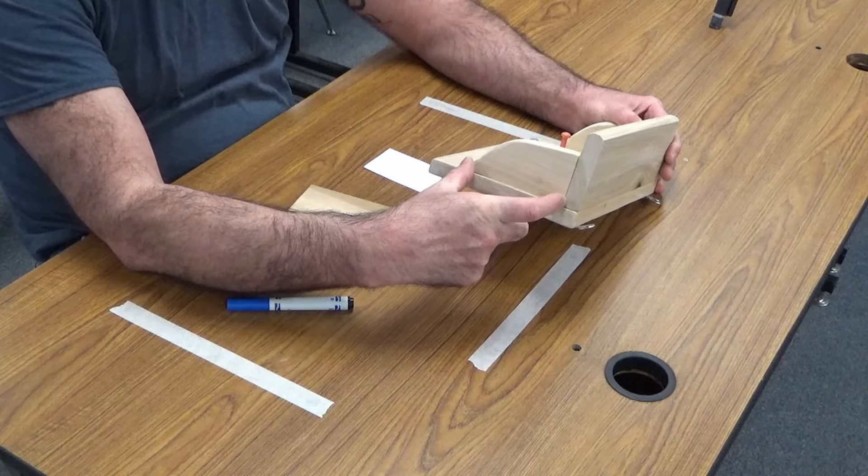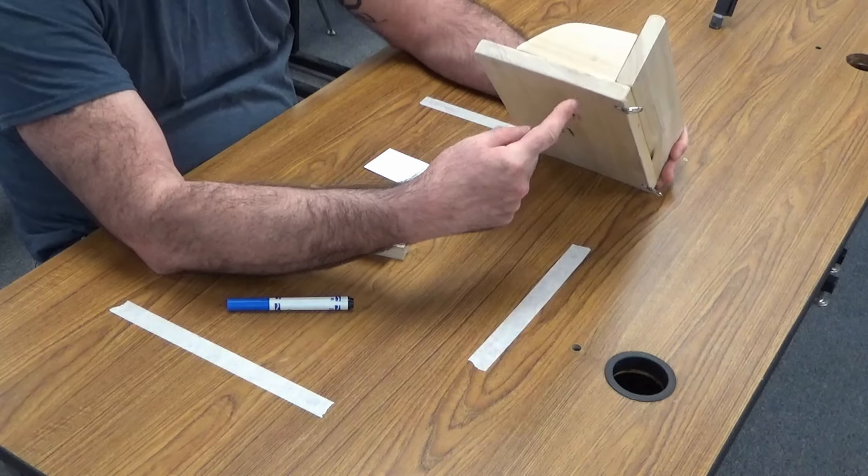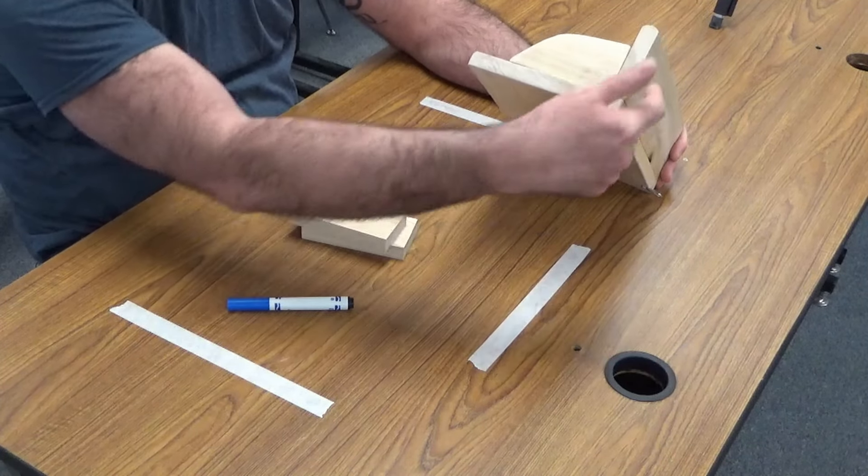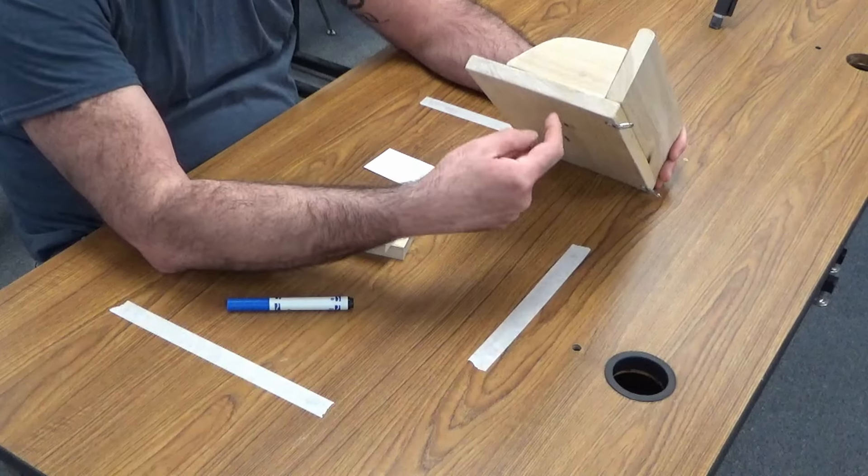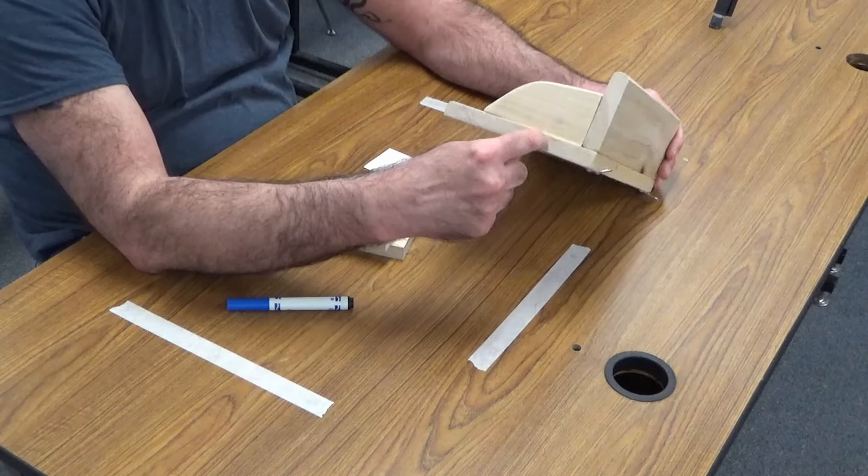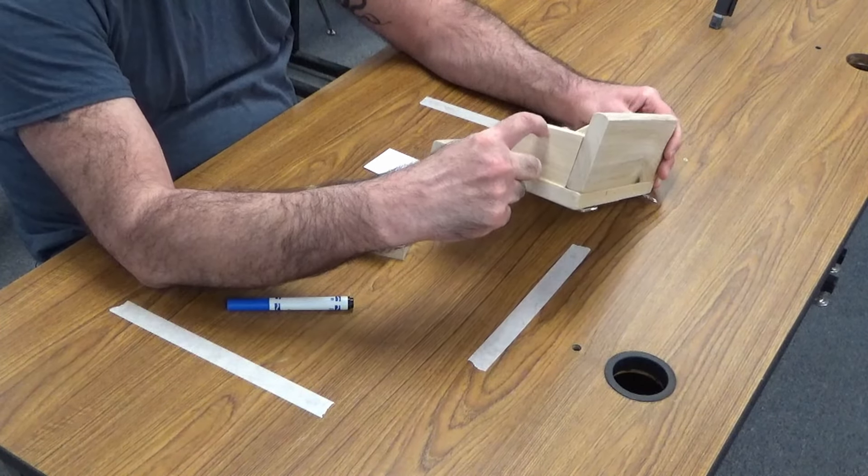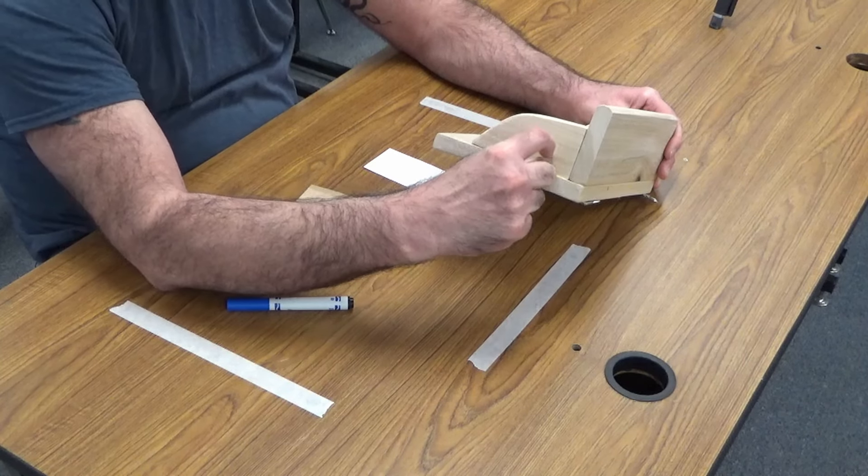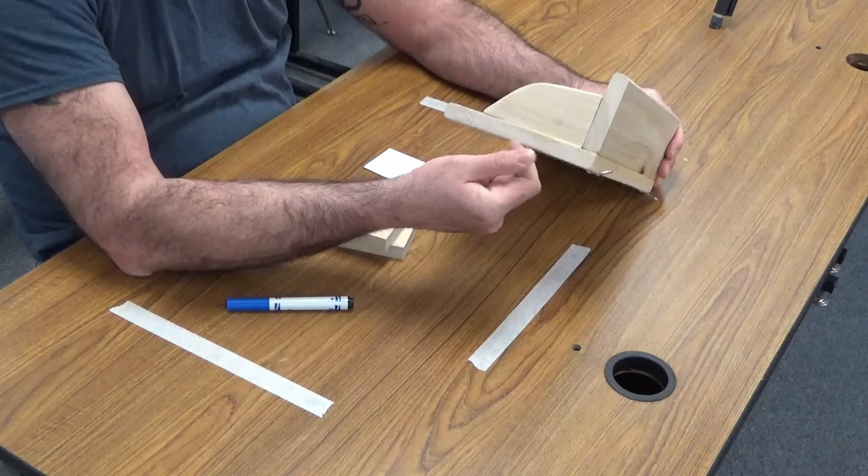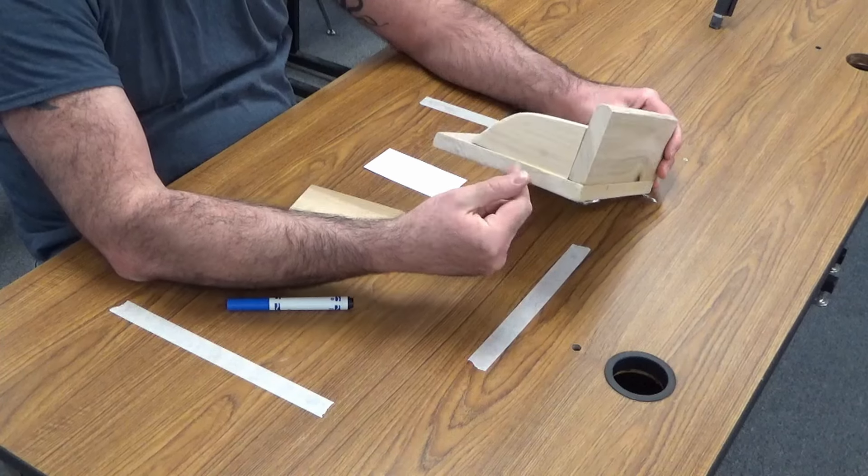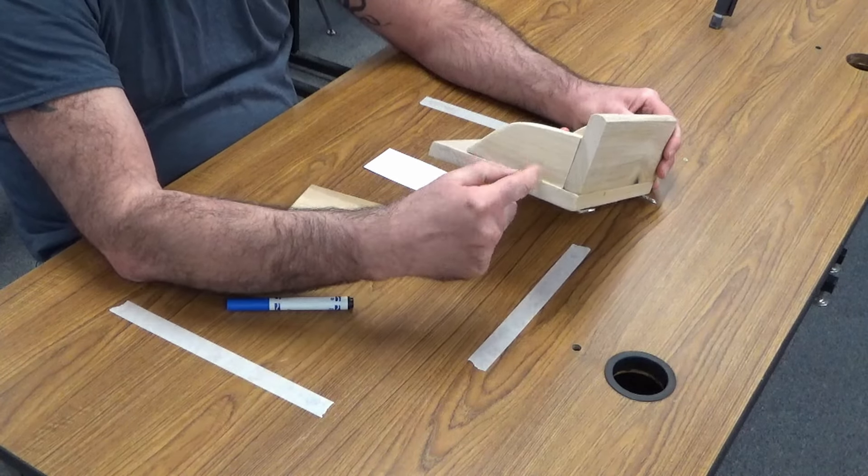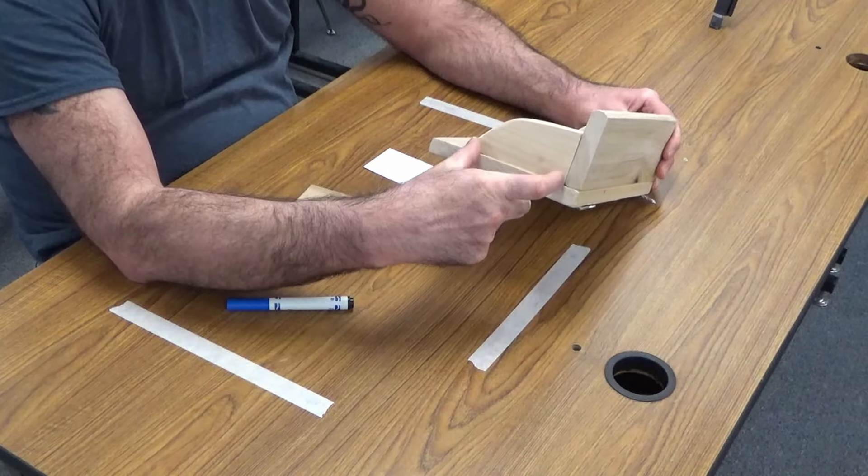You really want your bracket to be pretty long because we're going to be putting two screws through the back and one through the top to attach the bracket to the shelf. You also want it to be pretty thick. If it's too skinny, then the screw might go right through the bracket and poke out. So, you want it thick and you want it long.